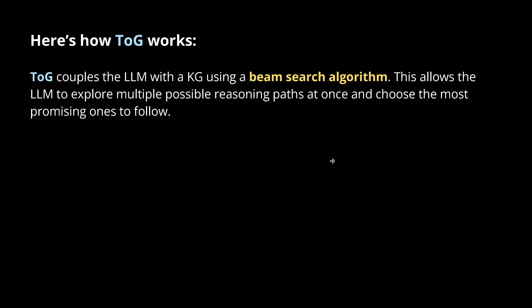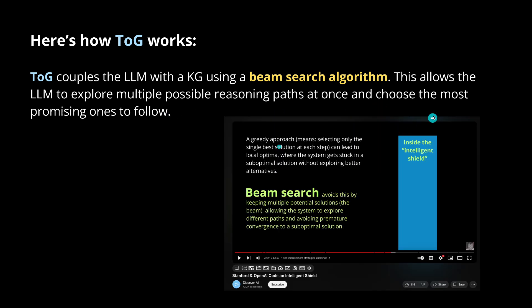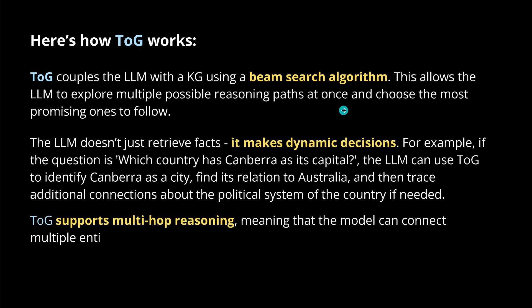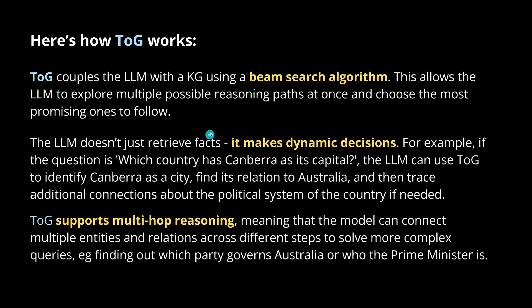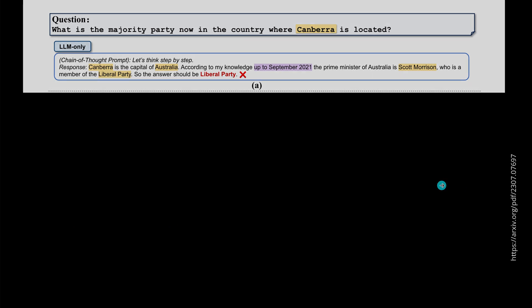ThinkOnGraph couples the LLM with a Knowledge Graph using a beam search algorithm. This helps the LLM explore multiple possible reasoning paths at once and then choose the best one. If you want a detailed explanation of beam search, I covered it in my Stanford and OpenAI video. The LLM doesn't just retrieve facts — it makes dynamic decisions. ThinkOnGraph also supports multi-hop reasoning, which is exactly what we need for more complex tasks.